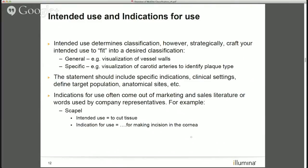You can craft your intended use language to fit, if you will, into a desired classification. If your initial intended use is somewhat general — just saying 'vessel,' for example — that's probably a lower-risk classification. If you become more specific, such as specifying carotid arteries, then depending on the clinical setting, that could be considered high risk because it's an artery and it's a carotid, potentially falling into a Class 3. The words you choose in your intended use can really drive that classification.